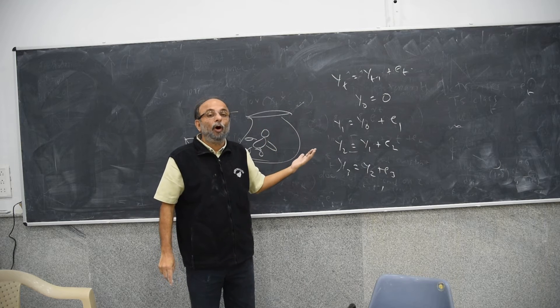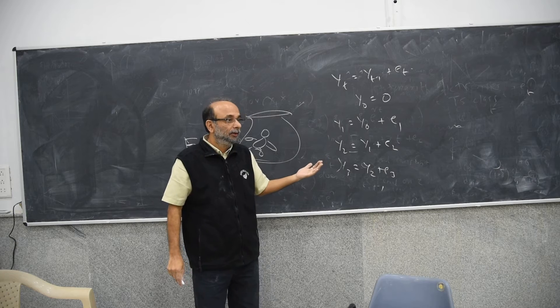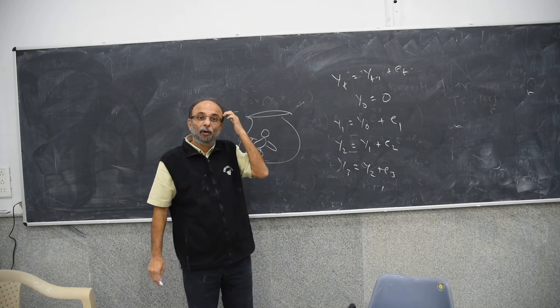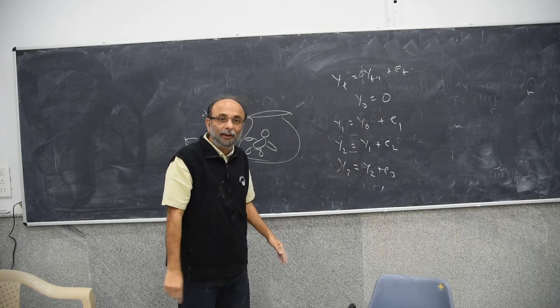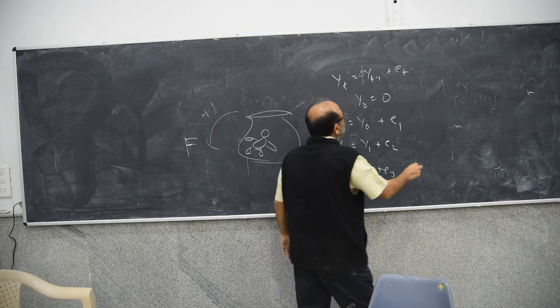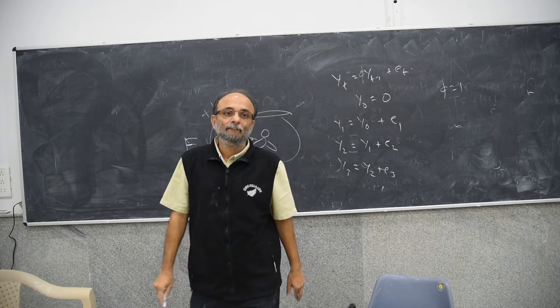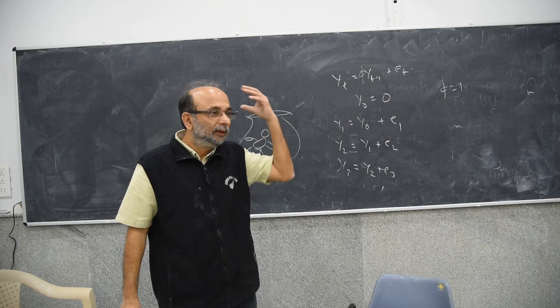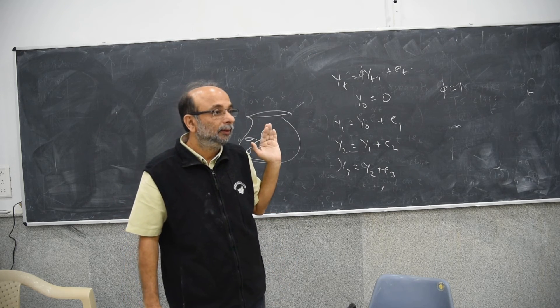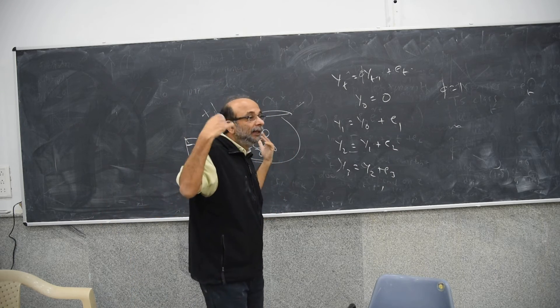This is called a random walk. It's called a simple random walk. I can generally write this as phi into yt minus 1 and specifically state that phi is equal to 1. Specifically then, I will keep in my mind that phi is equal to 1.